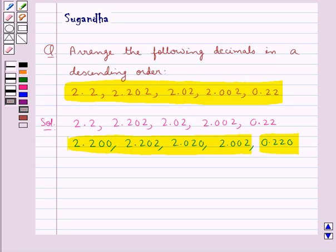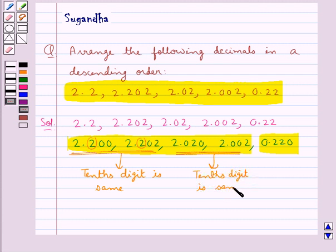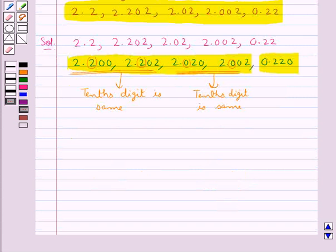Next we will compare the tenths digit of the decimal numbers. The tenths digit of 2.200 and 2.202 is the same, which is 2. Then the tenths digit of 2.020 and 2.002 is also the same, which is 0.